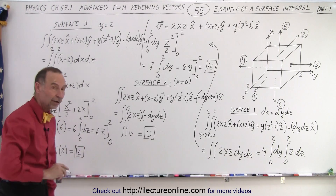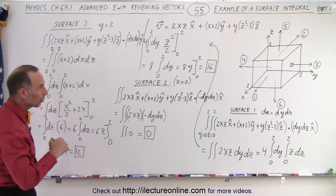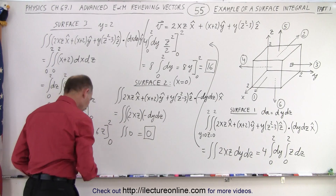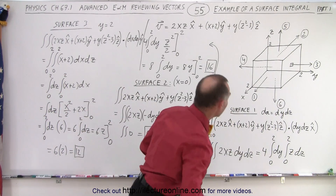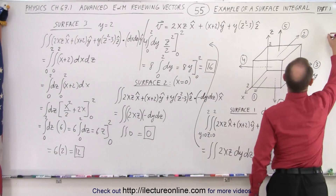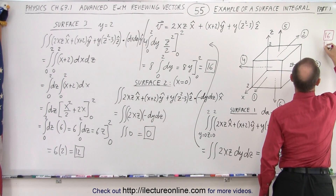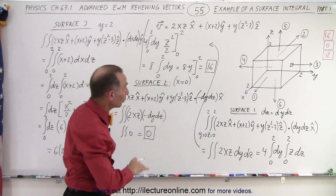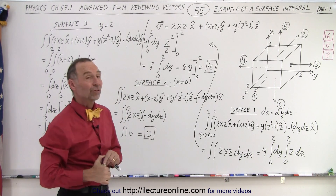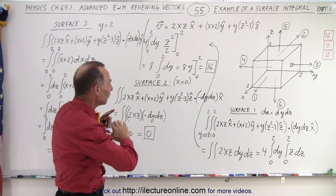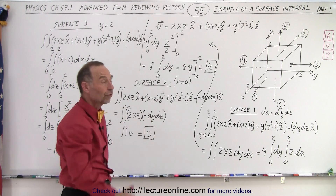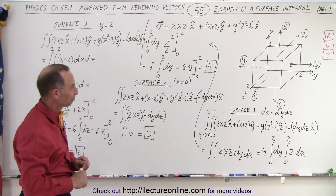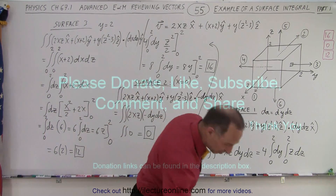So now we have the value of the surface integral across the third surface. On the first surface we get 16, on the second surface we get 0, and on the third surface we get 12. We need to do this again — we'll do another video for the next three surfaces, then add them all together to get the total surface integral across all six surfaces with that particular vector. And that is how it's done. Thank you.